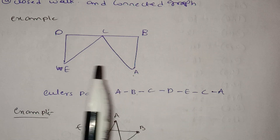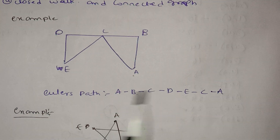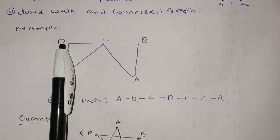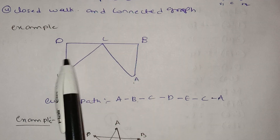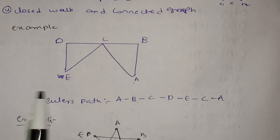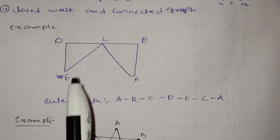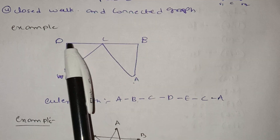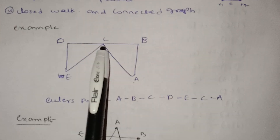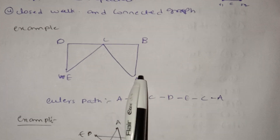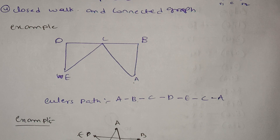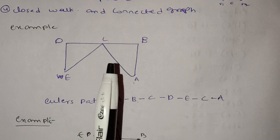Euler's path: the first and last vertex must be the same. Here is the graph with vertex D. We use the same edges. The path goes A→B, B→C, C→D, D→E, E→C, C→A. Each edge must not be repeated.